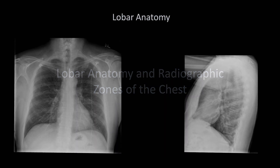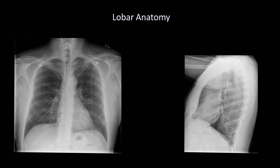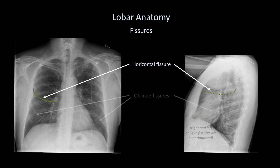I'll start by discussing lobar anatomy and radiographic zones in the chest in order to accurately describe the location of a focal lesion. The horizontal fissure of the right lung is typically the only fissure visible on the PA view, being roughly horizontal at the level of the hilum, and is generally not visible on the lateral view. The oblique fissures run at oblique angles to the x-ray beams in both the PA and lateral views, so they are usually not visible in either.